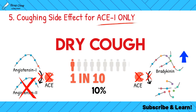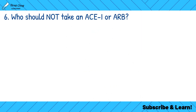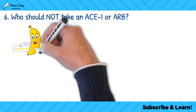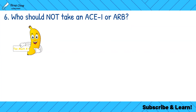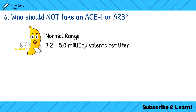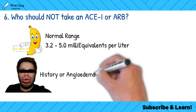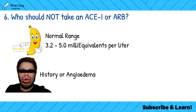Who should not take an ACE inhibitor or ARB? First, patients with already high potassium levels, since ACE inhibitors increase potassium — normal range is 3.2 to 5 mEq/L. Second, anyone with a history of angioedema should not be given an ACE or ARB, as they're likely to experience it again.